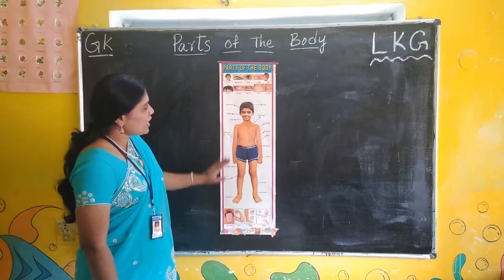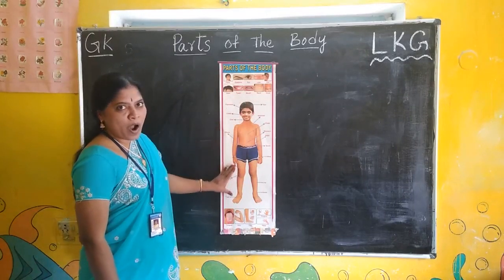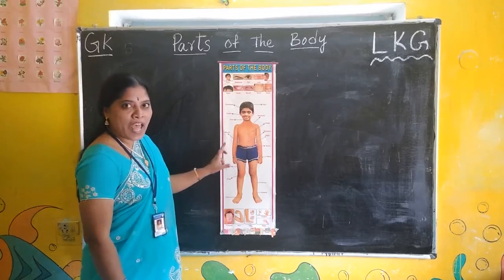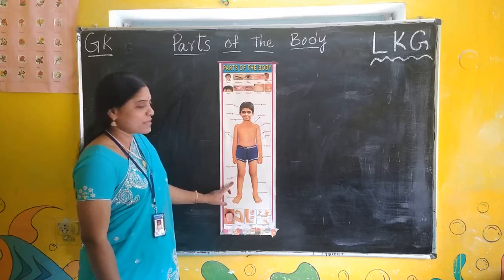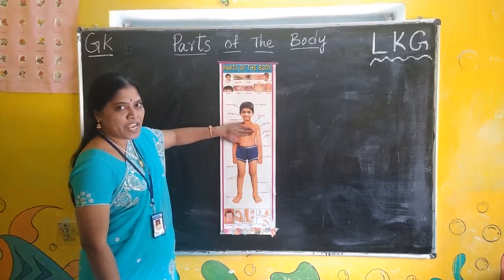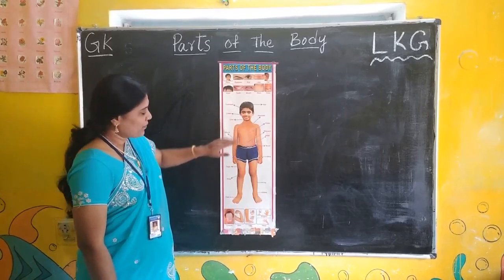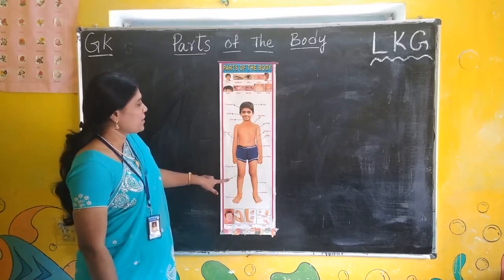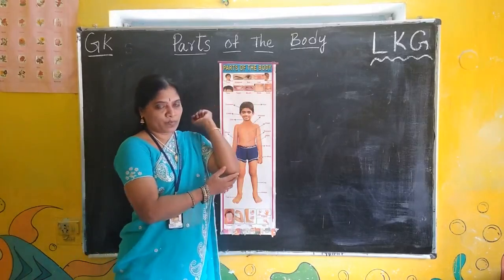Look at this point. This is head. This is our body. We have two hands and two legs. This is chest. This is stomach. This is knee. This is elbow.